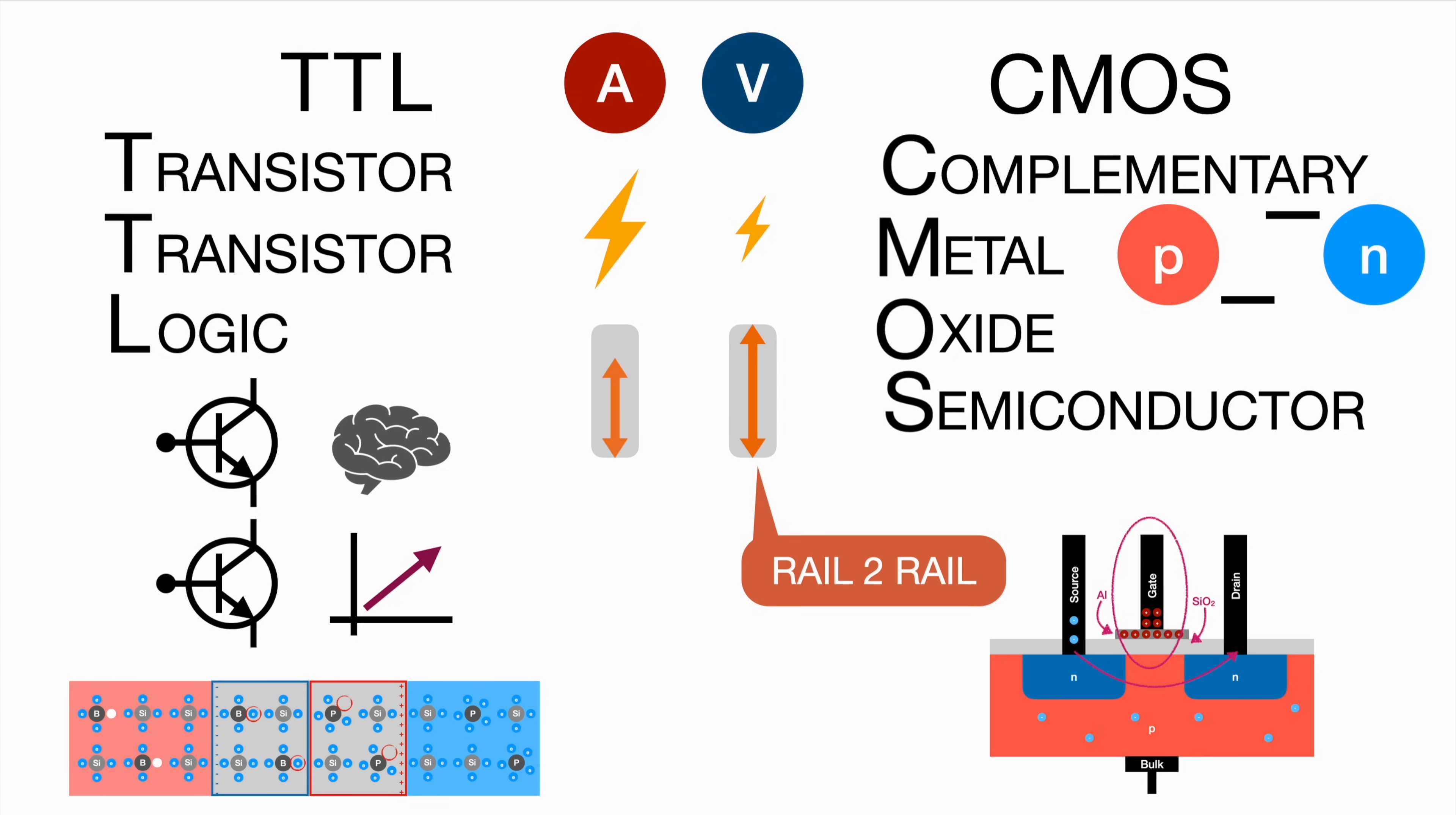The TTL on the other hand cannot do this rail to rail. It can't go all the way up, especially to the supply voltage. Reason being is that you have a voltage drop across the transistors, so you will lose some voltage. You will never reach the five volts as an output signal if you're supplying with five volts.